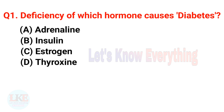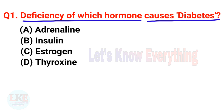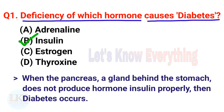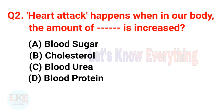First question: deficiency of which hormone causes diabetes? A) Adrenaline, B) Insulin, C) Estrogen, D) Thyroxine. The right answer is option B, Insulin. When the pancreas — a gland behind the stomach — does not produce insulin properly, diabetes occurs. It also comes in exams: which organ or gland is involved with diabetes? The right answer is pancreas.